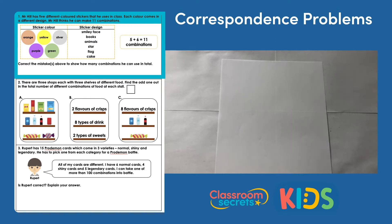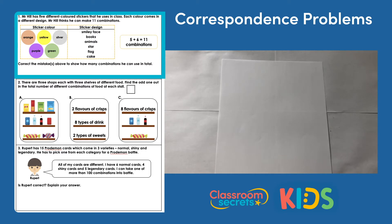Mr. Hill has five different coloured stickers that he uses in class. Each colour comes in a different design. Mr. Hill thinks he can make 11 combinations. We can see there we've got our sticker colour and we have our sticker design, and then we have a calculation: 5 plus 6 equals 11 combinations. The main question is: correct the mistakes above to show how many combinations he can use in total.